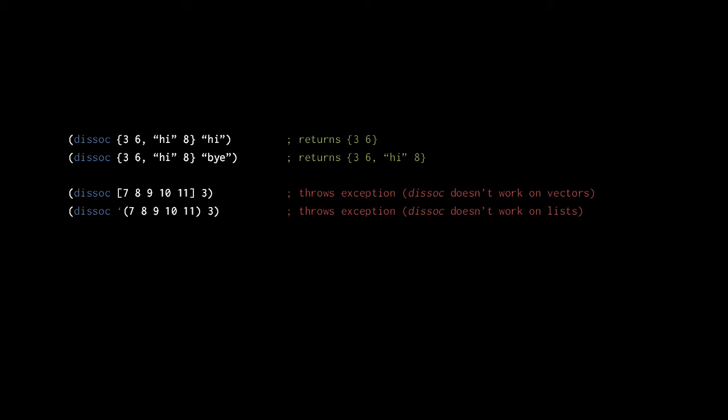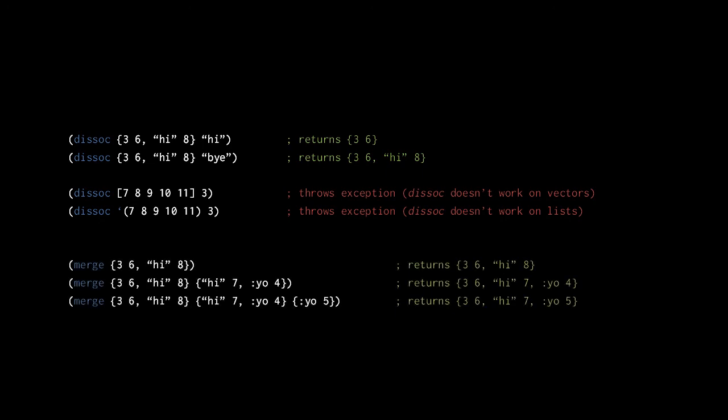The first dissoc call returns a new map that removes the string key "high". The second dissoc call returns the original map because that original map contains no string key "by". Despite what you might expect, dissoc does not work on vectors and so will throw an exception when passed a vector. The first merge call has only one map argument and so simply returns the original map. The second merge call returns a new map in which the key-value pairs of the second are added to the first, overriding existing values for keys as necessary.